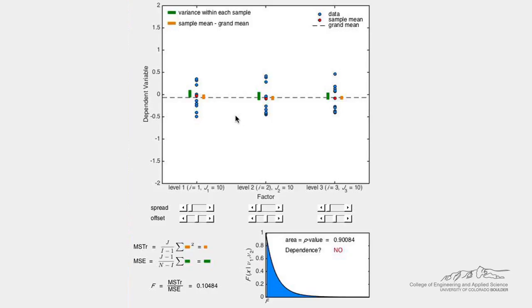Capital N is the total number of measurements in all experiments, so 10 plus 10 plus 10 is 30 in this case. Now let's calculate the mean in each experiment, also known as the sample mean, shown on the plot as the red dots.